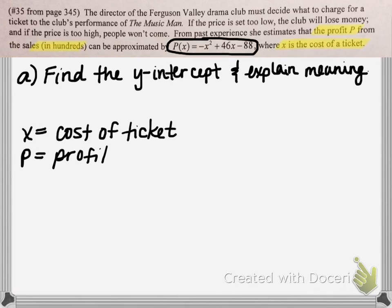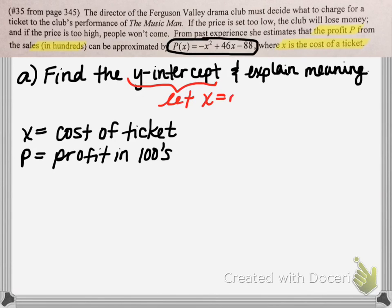So the profit is in hundreds. We've identified our variables, and that's going to help us in the interpretation portion of this problem. We know that we want to find the y-intercept — in this case, the y-intercept would be equivalent to the p-intercept. Any time we're looking for the y-intercept, we're always going to find that by letting x equal 0; in other words, substituting 0 into our function in place of x.